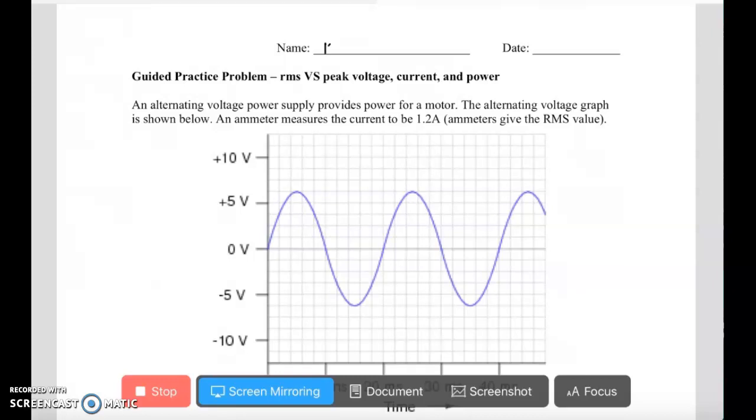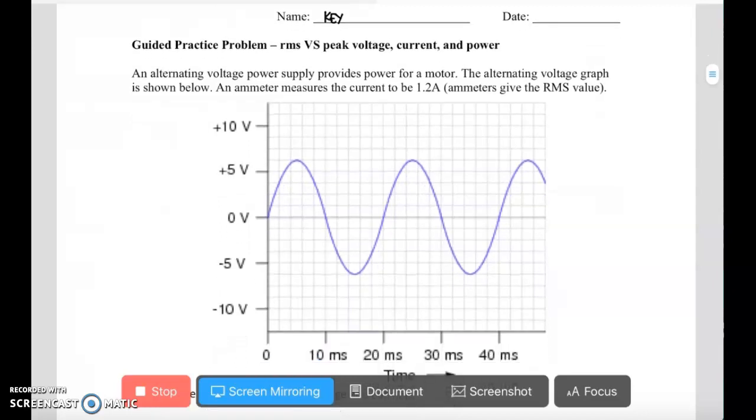So let's take a look at this problem. We are told that an alternating voltage power source provides power for a motor. The alternating voltage graph is shown below, and an ammeter measures the current to be 1.2 amps.